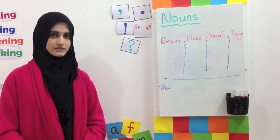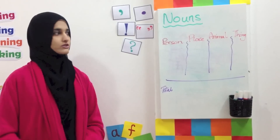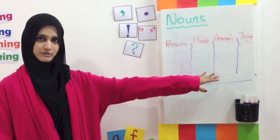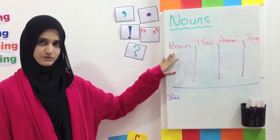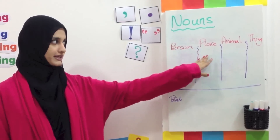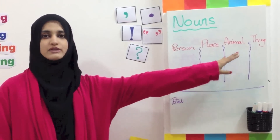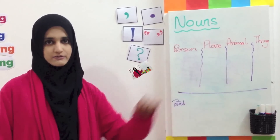The first thing you do is you are going to make four columns on your paper. The first one says person, place, animal, and thing.